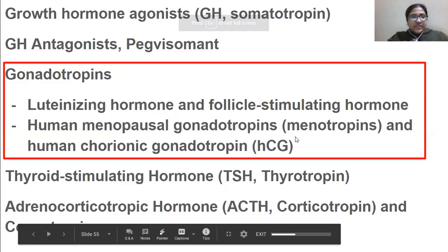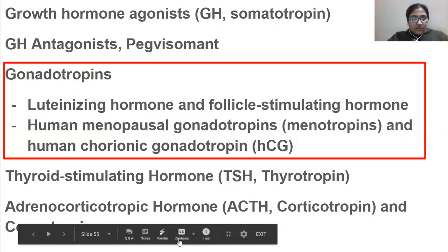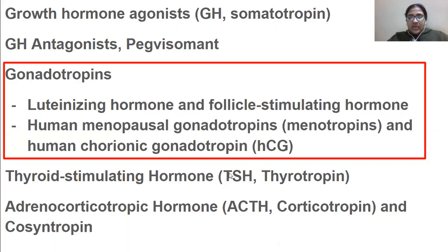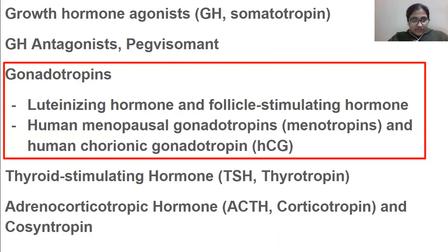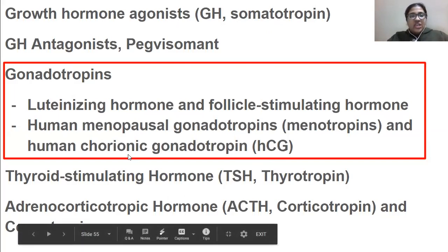Today we will talk about gonadotropins. The hormones we have to cover are luteinizing hormone, follicle stimulating hormone, human menopausal gonadotropin — also called menotropins — and HCG, which is very famous among ladies who are pregnant or trying to conceive. HCG stands for human chorionic gonadotropin.